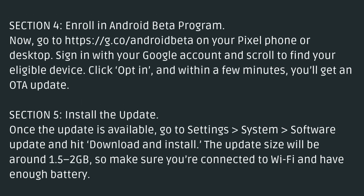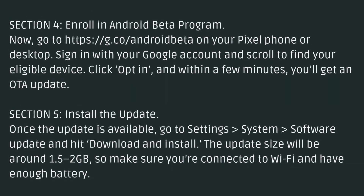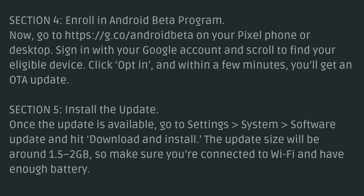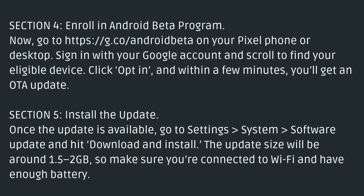Section 5: Install the Update. Once the update is available, go to Settings > System > Software Update, and hit Download and Install. The update size will be around 1.5 to 2 gigabytes, so make sure you're connected to Wi-Fi and have enough battery.